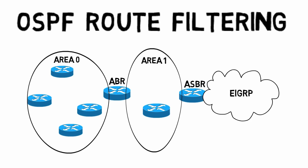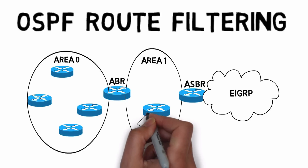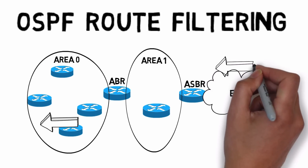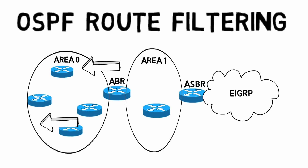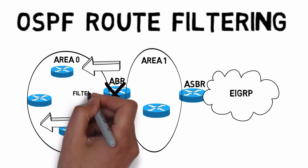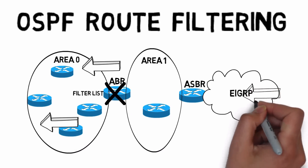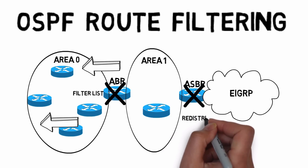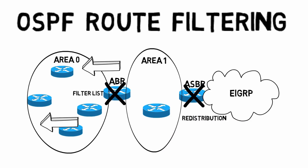When doing OSPF route filtering, we typically filter routes either at the ABR or the ASBR. The ABR generates Type 3 LSAs to advertise networks from Area 1 into Area 0. The ASBR generates Type 5 LSAs to advertise networks from the EIGRP autonomous system into OSPF. The ABR is an appropriate place to filter Type 3 LSAs using a filter list, while the ASBR is appropriate for filtering Type 5 LSAs, which is done as part of redistribution configuration — covered in a separate module.